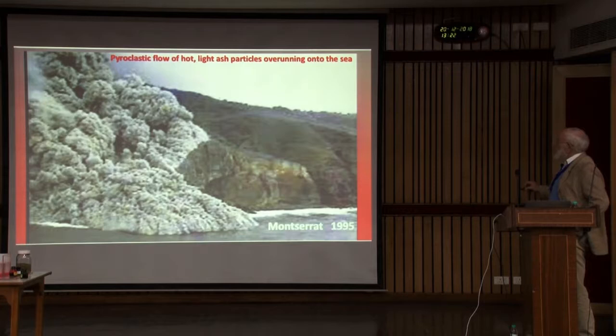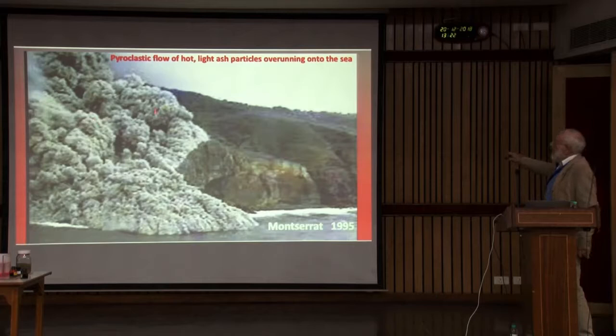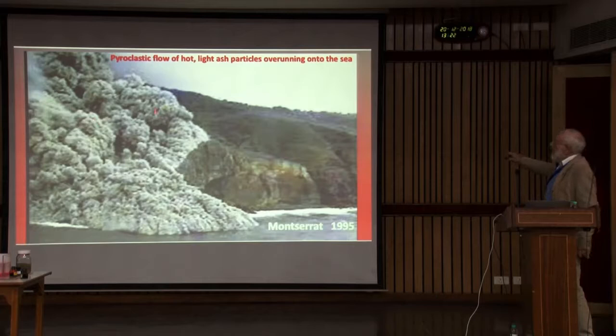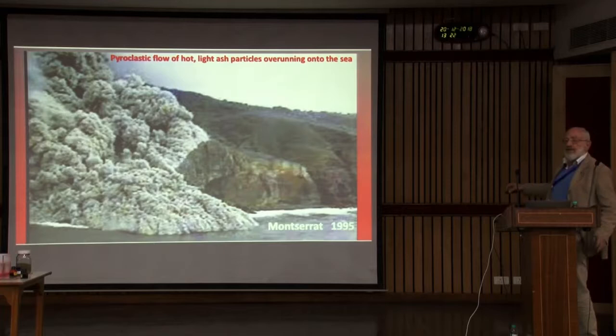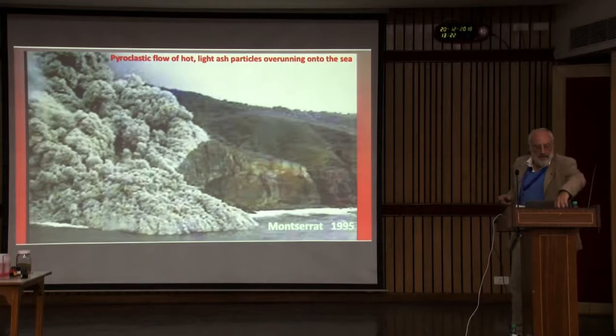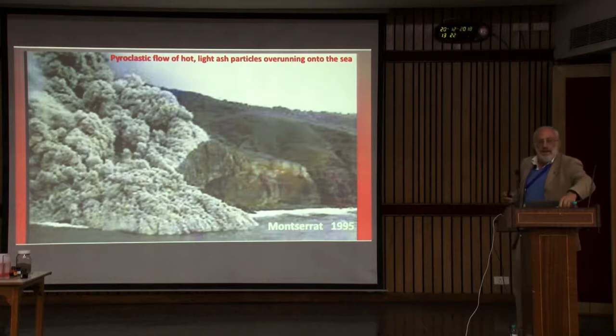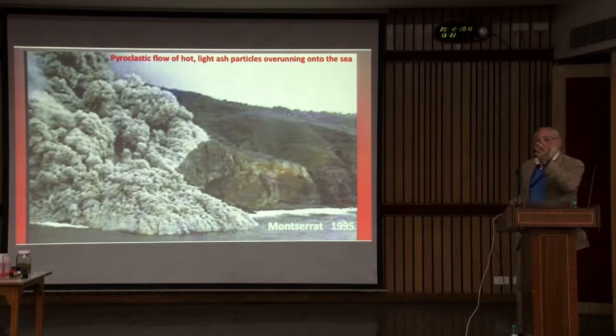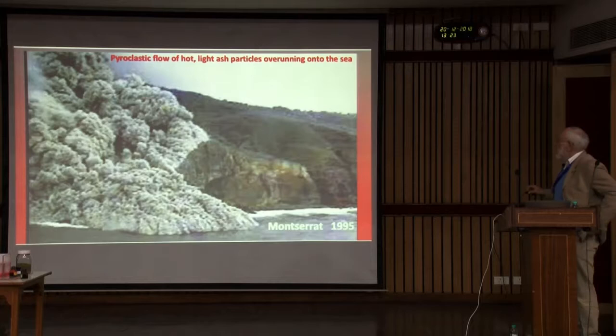This is now coming closer to what we're going to talk about. This is a pyroclastic flow from Montserrat in 1995. Pyroclastic flow is the geological term for a hot, ash-laden particular gravity current. Here it's coming over the sea and propagates for quite some time. There are lots of different sizes of ash, and it's more or less like a porous medium. The air under pressure has forced some of the rock apart, and you get lots of little particles, which can be, because they take in air in the pores, lighter than water.